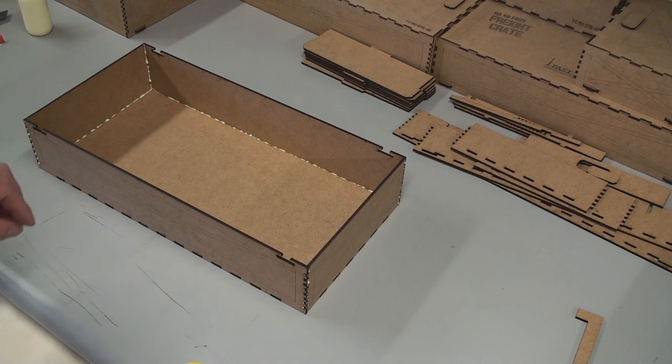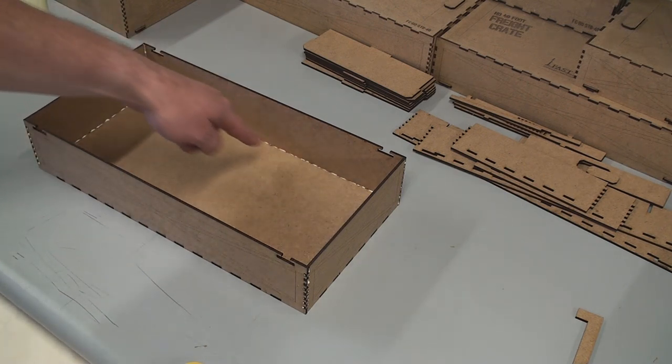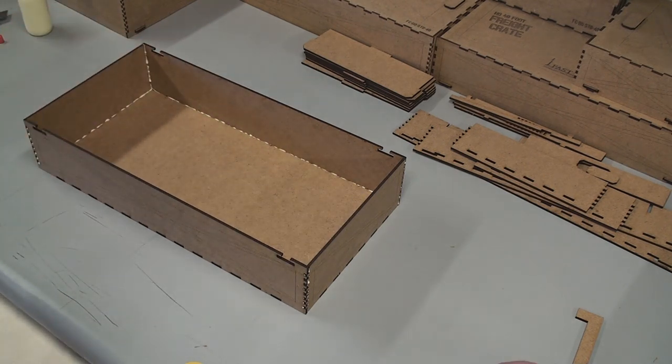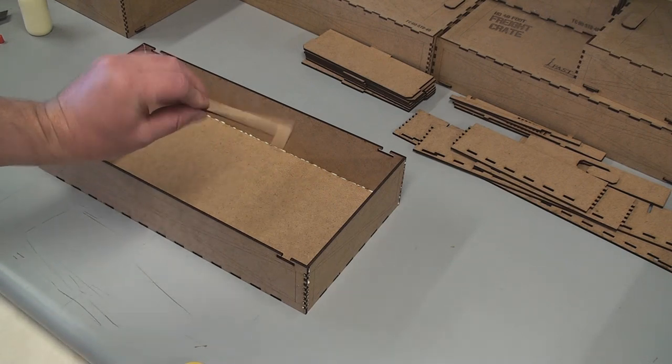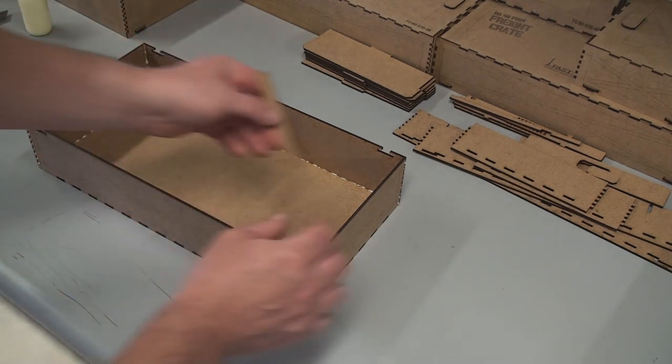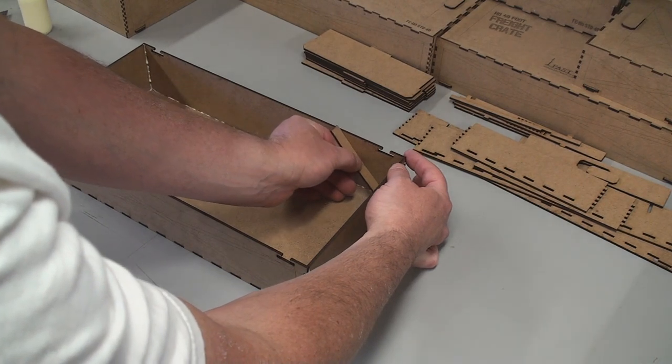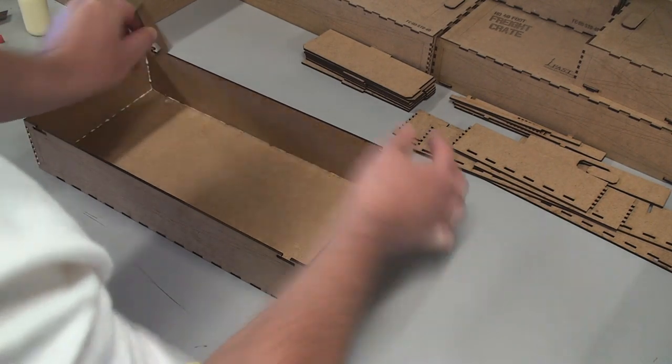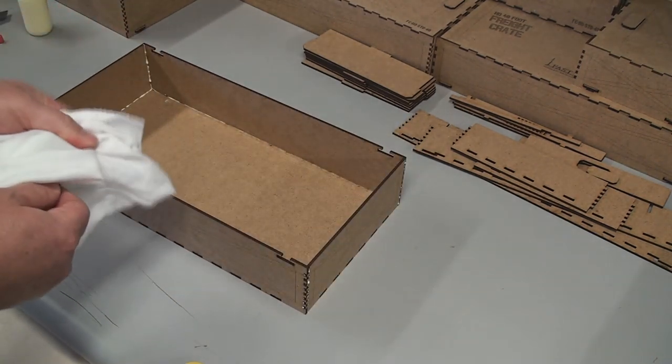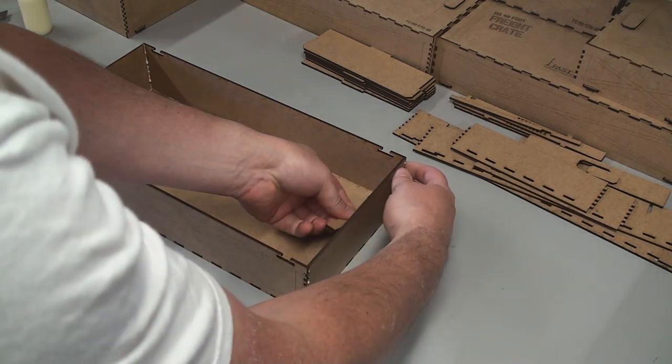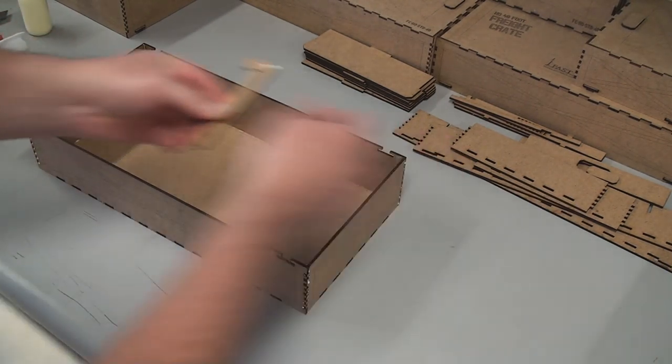Now you can see on the inside, there's some glue that's leaked inside, and that's what this tool is for. It's just this little hockey-shaped piece of hardboard. You can just slide it down like that, wipe off the extra glue, and I do that on all the inside corners.